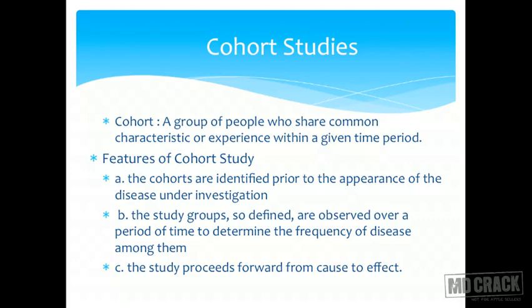In a cohort study, only exposure is present — disease is not yet there. We have two groups: people exposed and people not exposed. We follow these two cohorts forward to see if disease develops. If the disease develops more in the exposed group, we say the exposure causes the disease. The study proceeds from cause to effect.